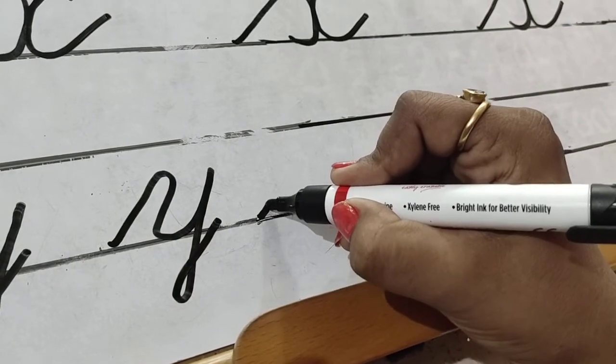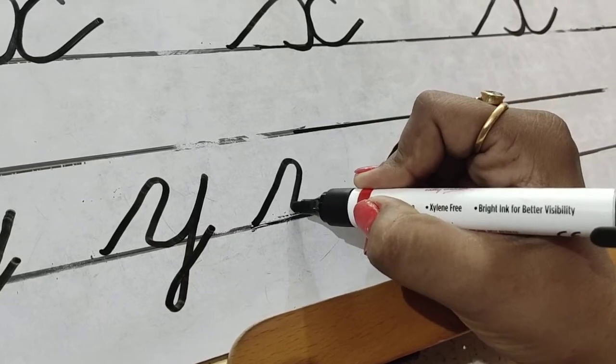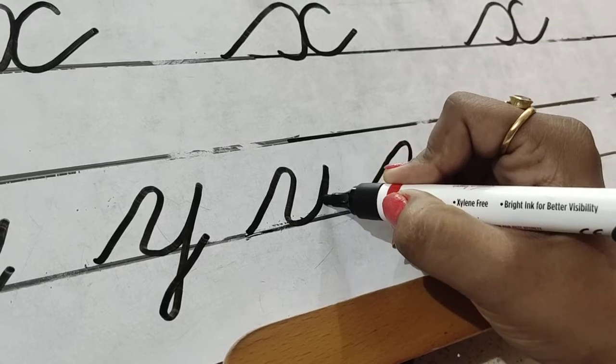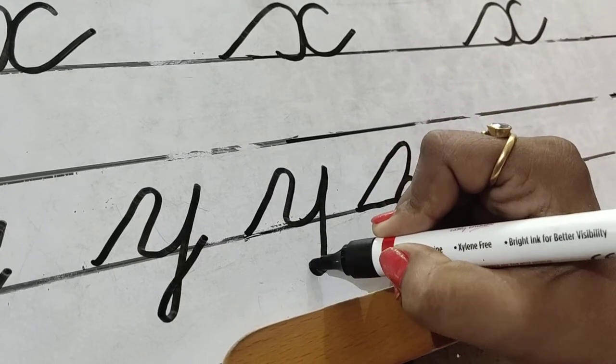Go up direction, come back, curve, go up, come back on the same line, cross the lower line and make a cross.